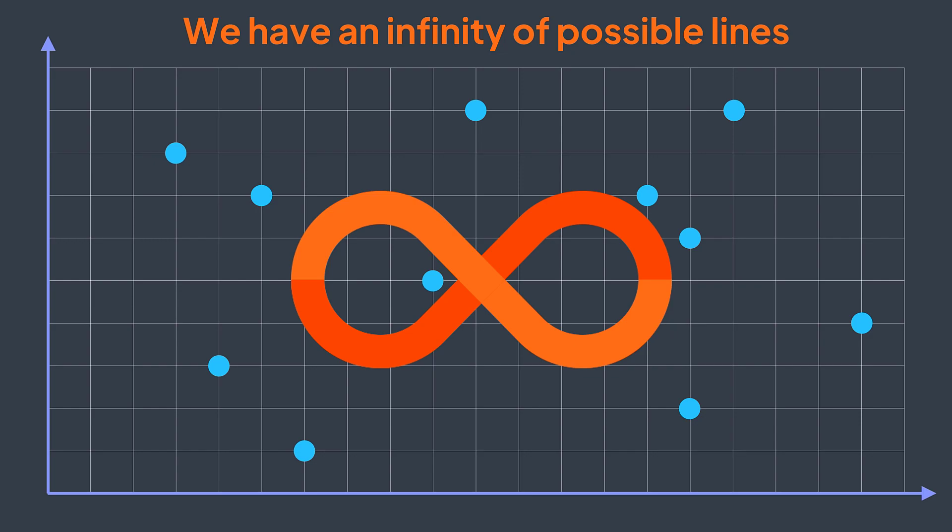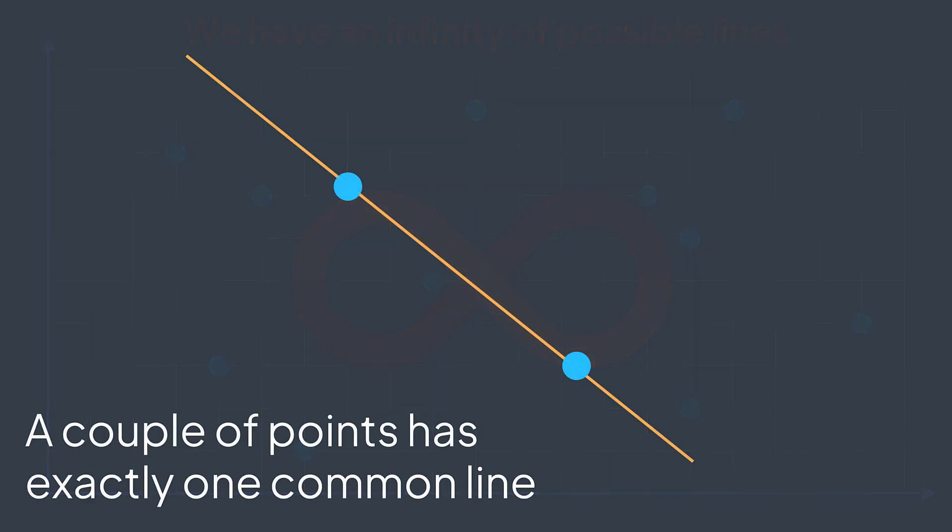The number of lines that pass from 0 or 1 point is infinite. But the number of lines that pass from 2 points or more is not — we can have at most 1 per each couple of points. In other terms, for each couple of points, there exists only one line that passes from both of them. And because we're searching for the line with the maximum number of points, we can just ignore those with 0 or 1 point.